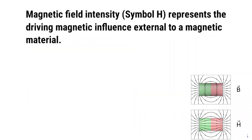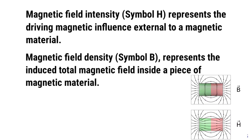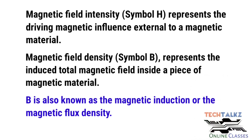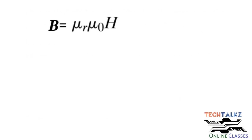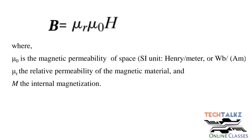Magnetic field intensity is represented as capital H. It represents the driving magnetic influence external to the magnetic material. Then another quantity is magnetic field density, commonly represented as capital B. It represents the induced total magnetic field inside a piece of magnetic material. B is also known as magnetic induction or magnetic flux density. Capital B and capital H are related: capital B is equal to mu_R times mu_naught times capital H. Mu_naught is the magnetic permeability of free space and mu_R is the relative permeability of the magnetic material.